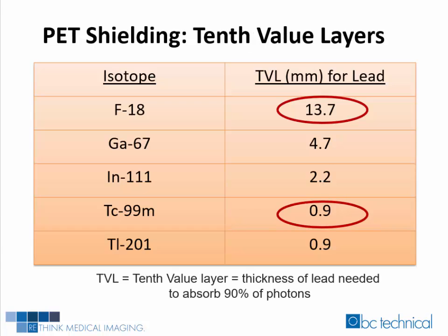When we talk about reducing our exposure from shielding, this is the put-up principle. This is clearly the most expensive of all of the principles, and not all shielding is created equal. The shielding needed for PET is many times thicker and much more expensive than the shielding you need for nuclear medicine. This slide shows the tenth value layer of lead for nuclear medicine and molecular imaging isotopes. The tenth value layer is the thickness of lead needed to stop 90% of the photons from penetrating the material. For technetium-99m, that value is 0.9 mm. For F18, the value is 13.7 mm. The takeaway here is that you need 13 times more lead to stop PET isotopes than with standard nuclear medicine isotopes.